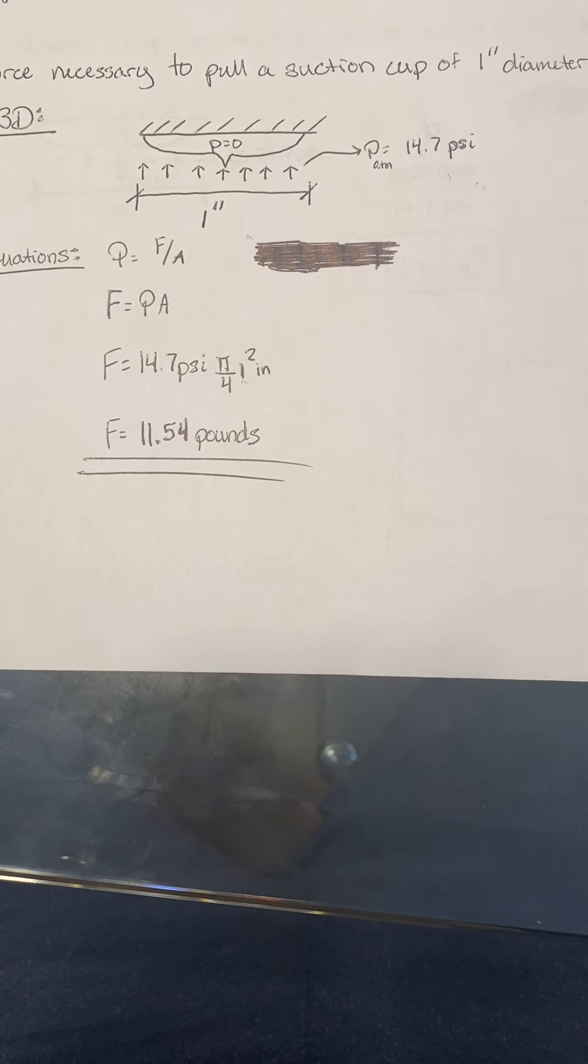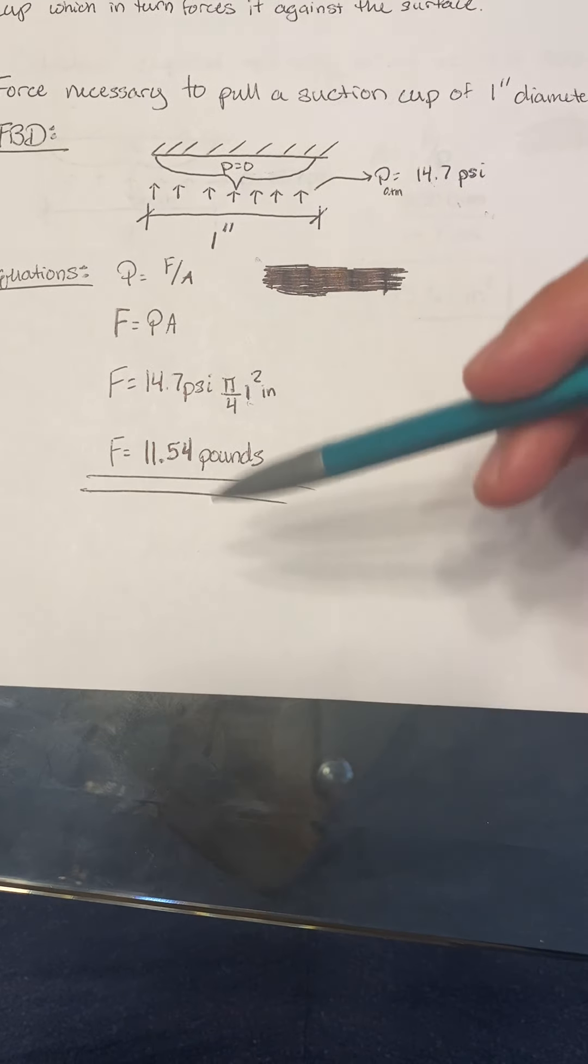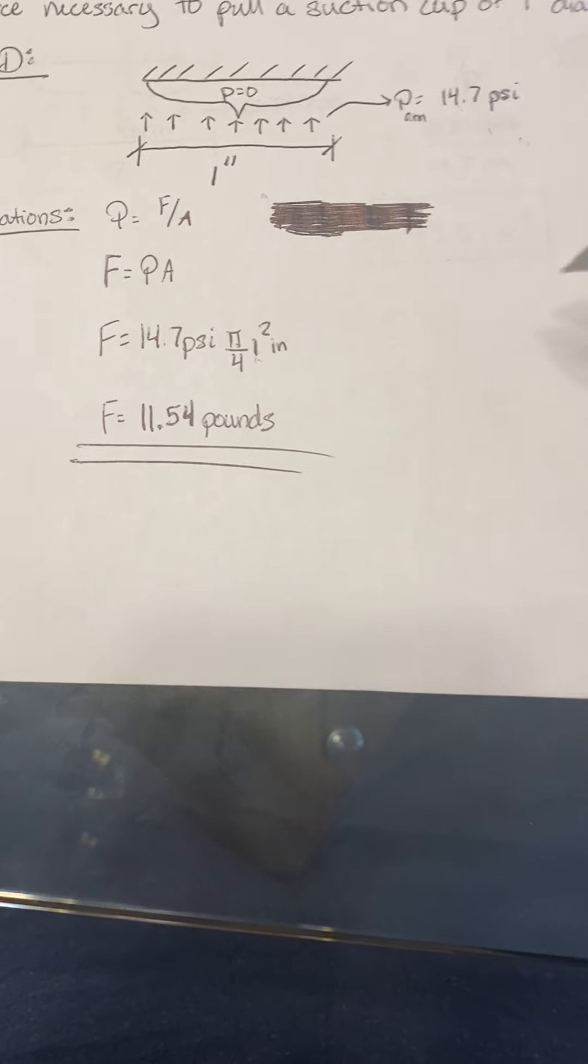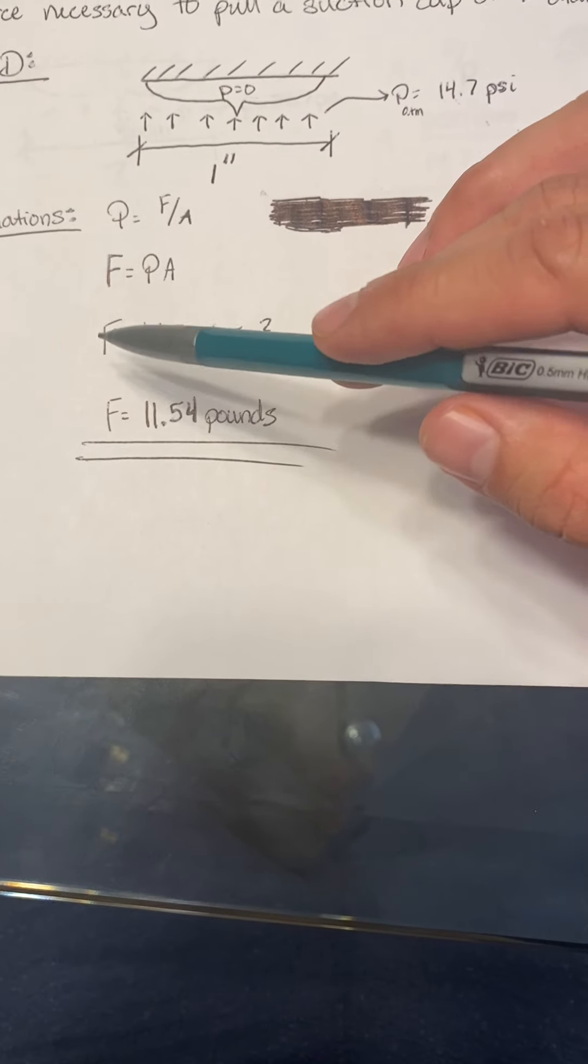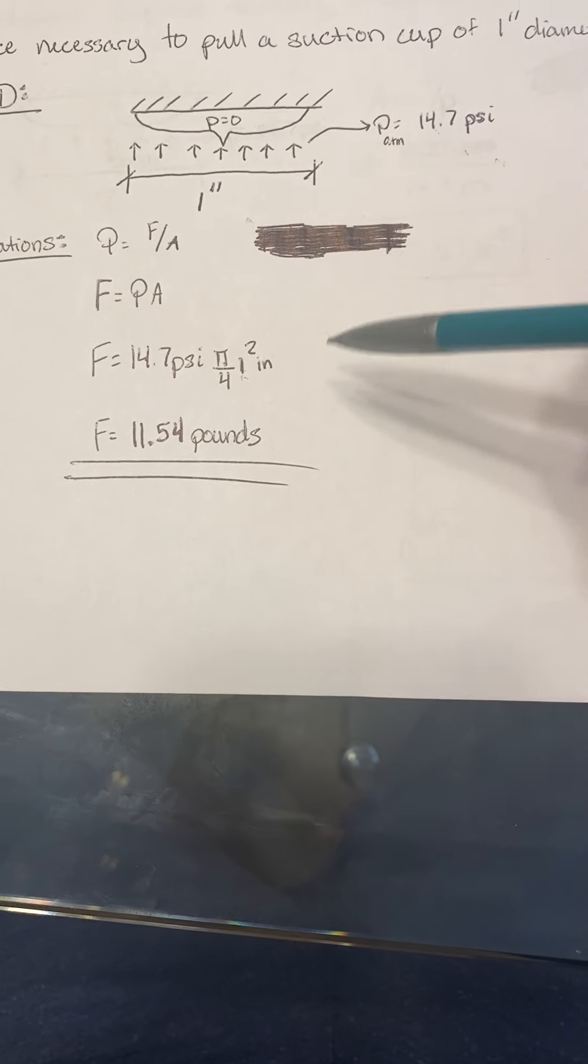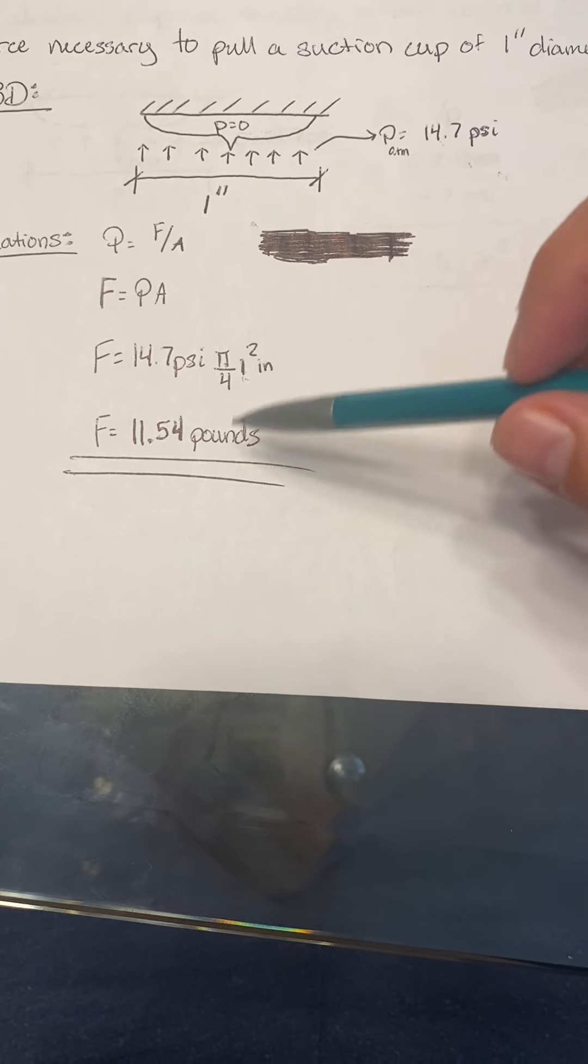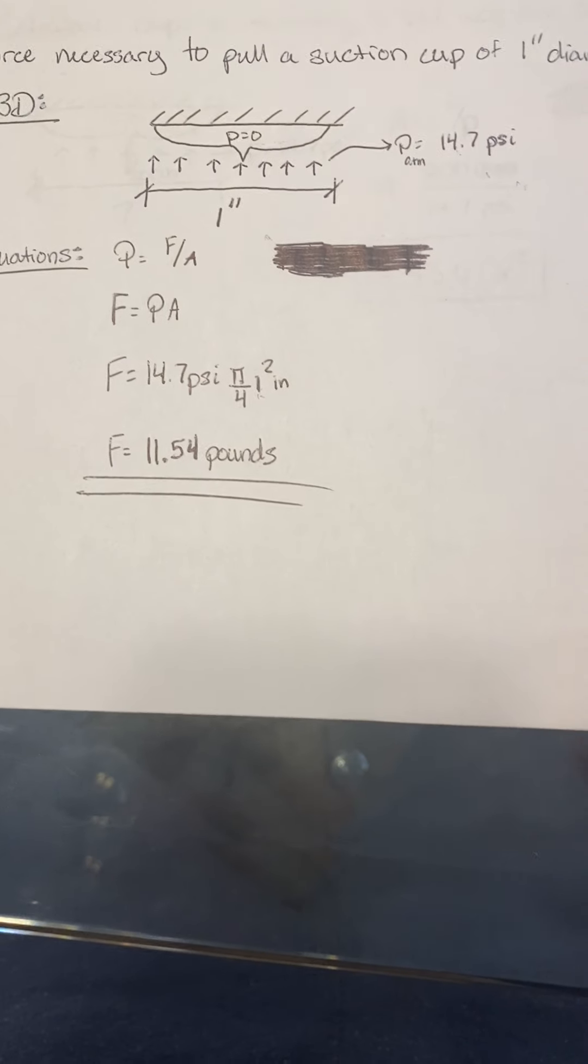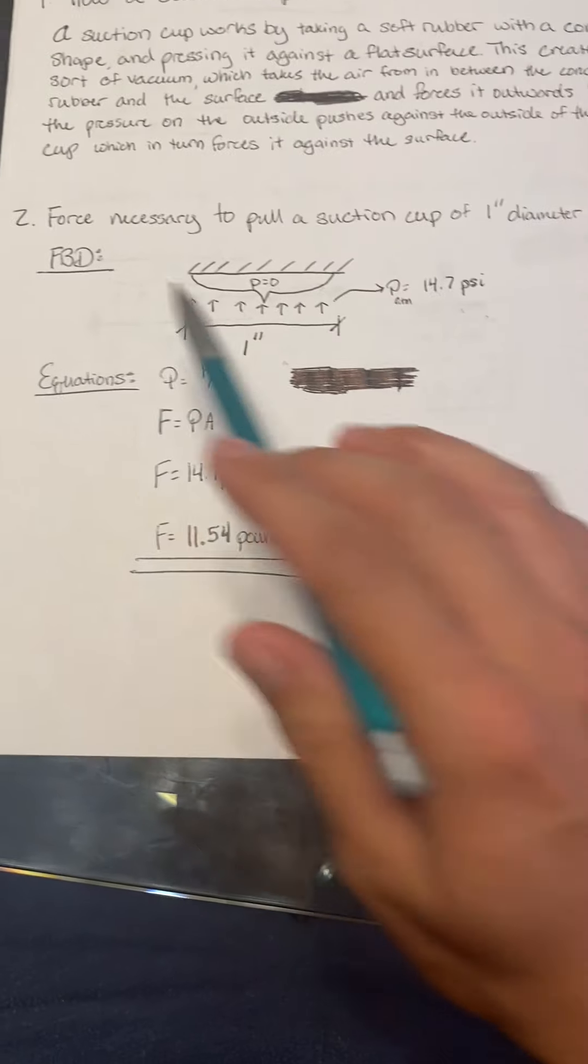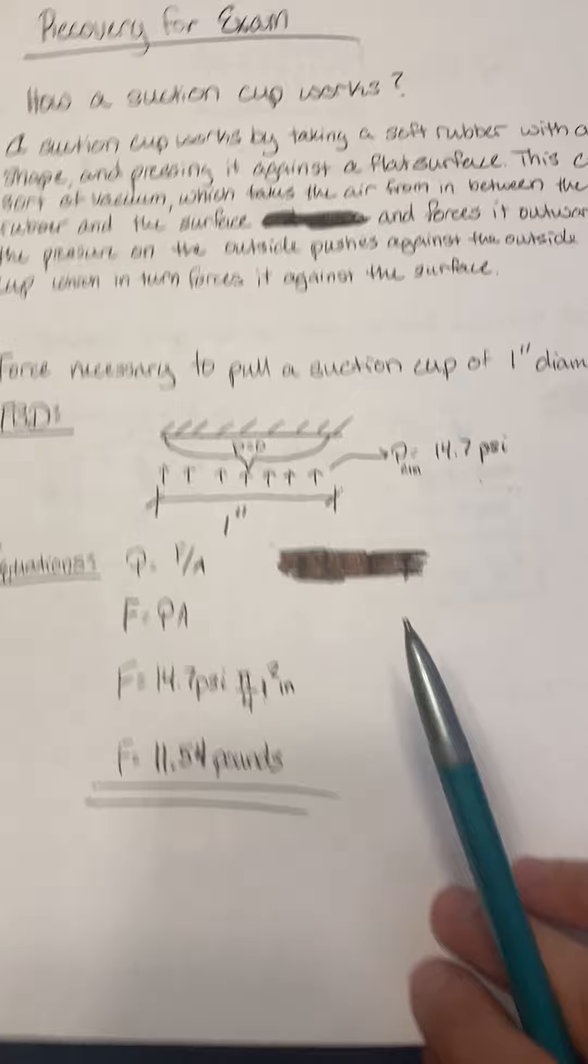The only pressure we have is the 14.7 psi acting against the suction cup, so you just plug and chug: force equals 14.7 psi times the area, which is calculated by π over 4 times one squared. I got 11.54 pounds as the force necessary to pull a suction cup of one inch diameter.